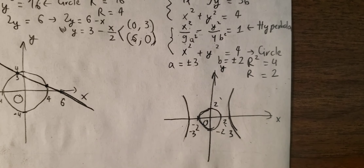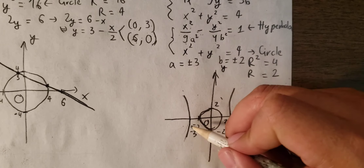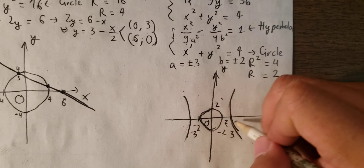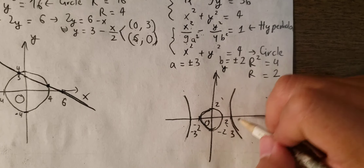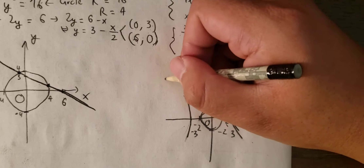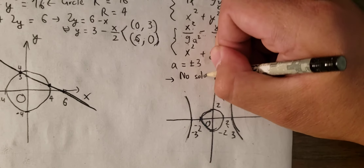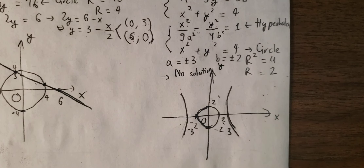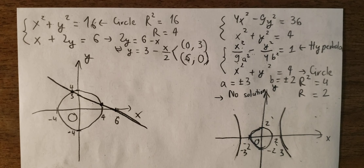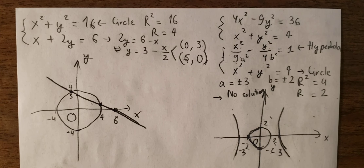After we draw the diagram, we can see that the two curves do not intersect. So we can conclude that there is no solution. That's the end — thank you for watching.